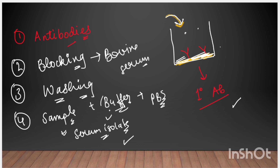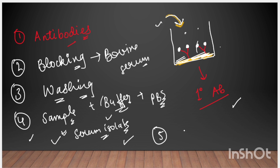Now we add this prepared sample to the well. You will see that when the antigen is present in our blood, it is antigen-specific, so this antigen will attach to the paratope of the primary capture antibody. If the antigen is present, it will get stuck to the antibody. The fourth step is complete. After the fourth step, we will wash again so that unbound antigens or antibodies are washed off and our accuracy will increase.